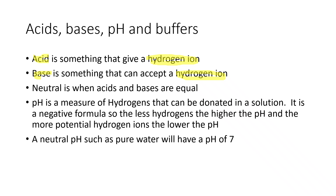Sodium hydroxide can take in a hydrogen ion and when it does, it forms water. A neutral solution is where acids and bases are at equal levels — you're not getting more or fewer hydrogens. They're even.